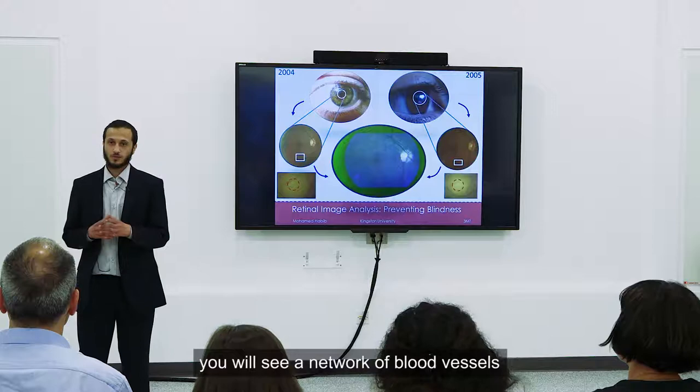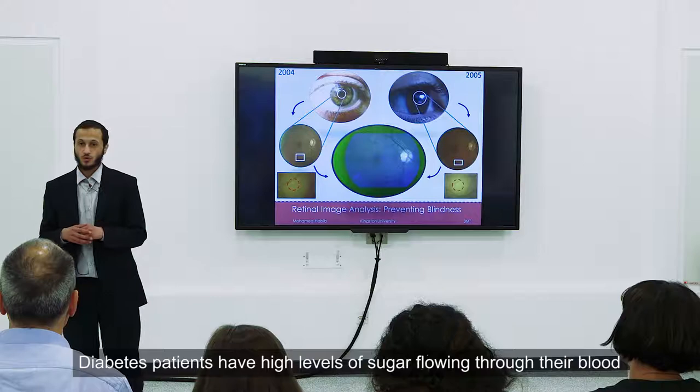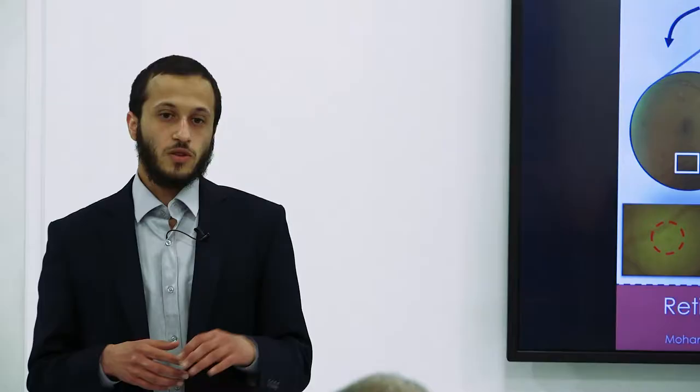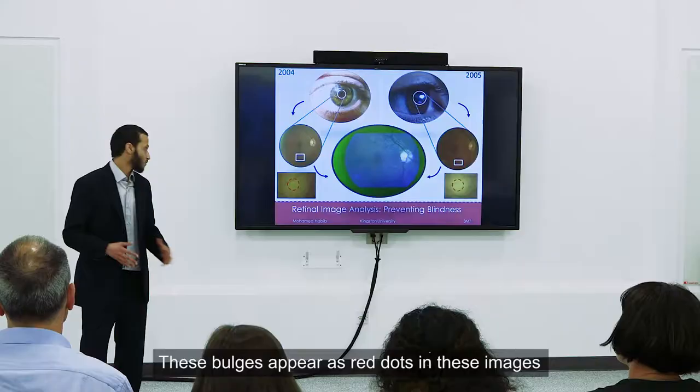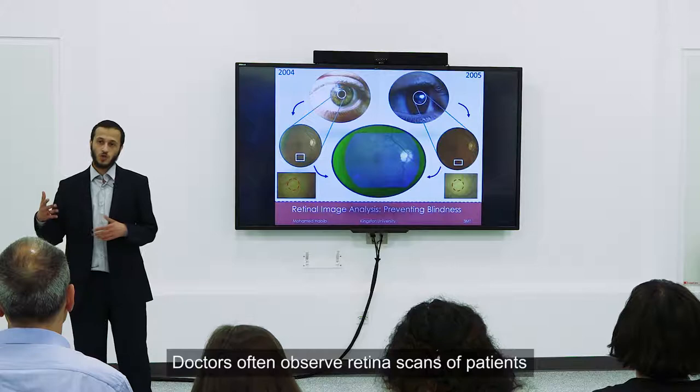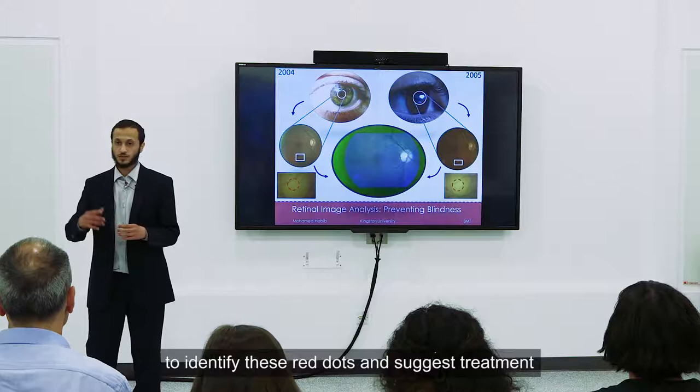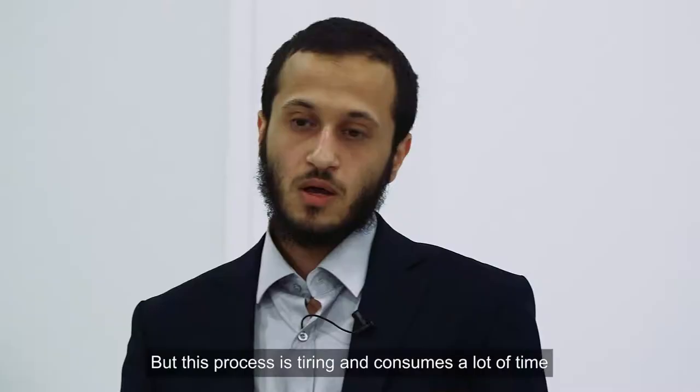Diabetes patients have high levels of sugar flowing through their blood. As a result, the walls of the blood vessels can become weaker and bulges can form on the smaller vessels. These bulges appear as red dots in these images.